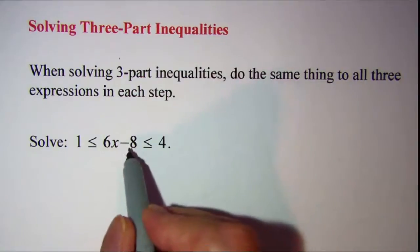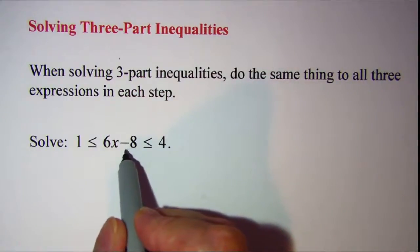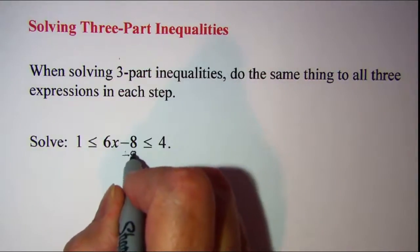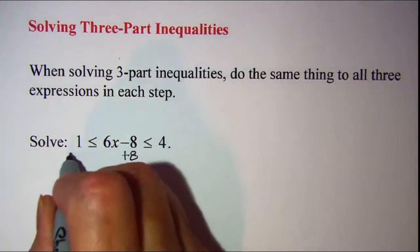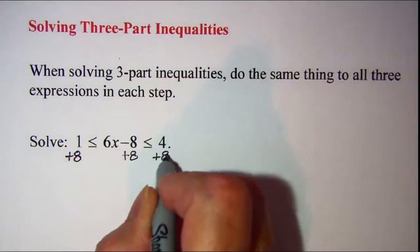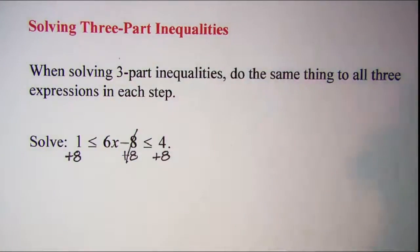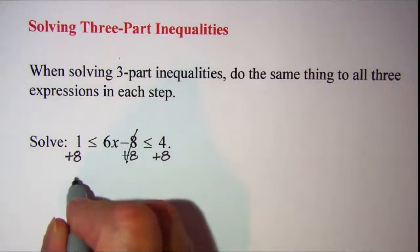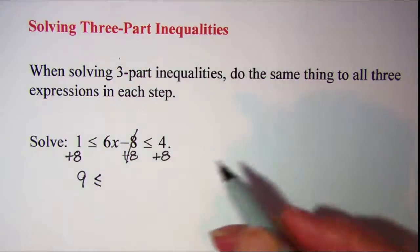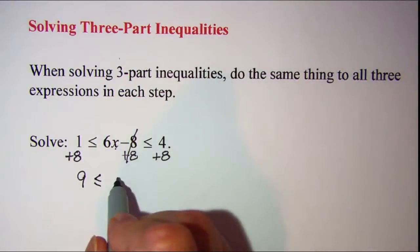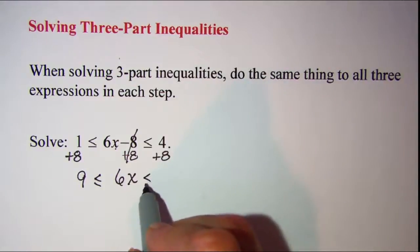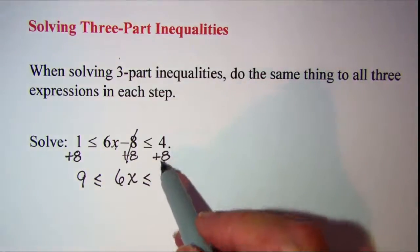First thing I want to do then is to remove this negative eight. I'll do that by adding eight to all three parts, and that will cancel in the middle part. And I have one plus eight is nine on this left part, less than or equal to, and then I now have six x in the middle, and then less than or equal to, four plus eight is twelve.